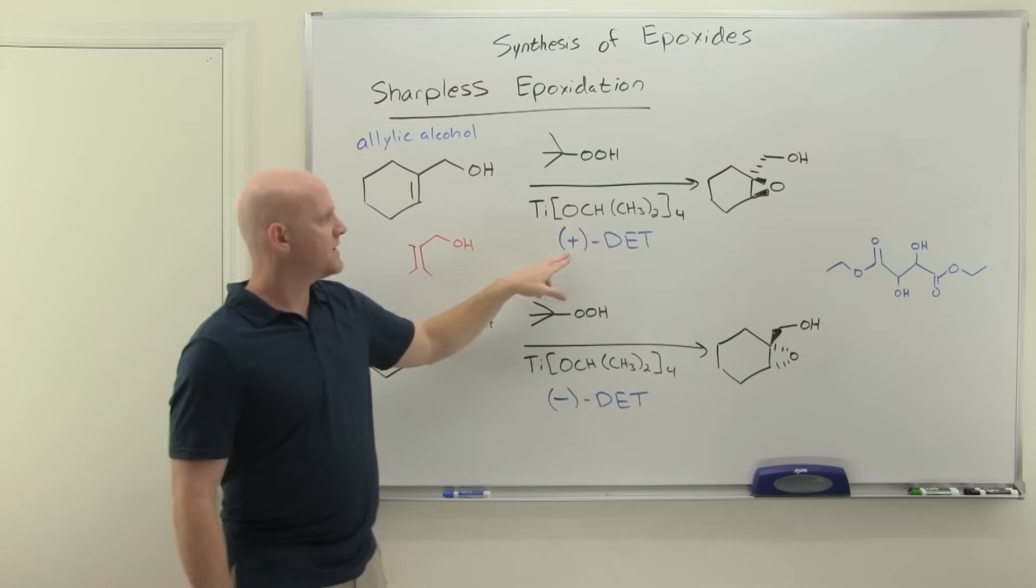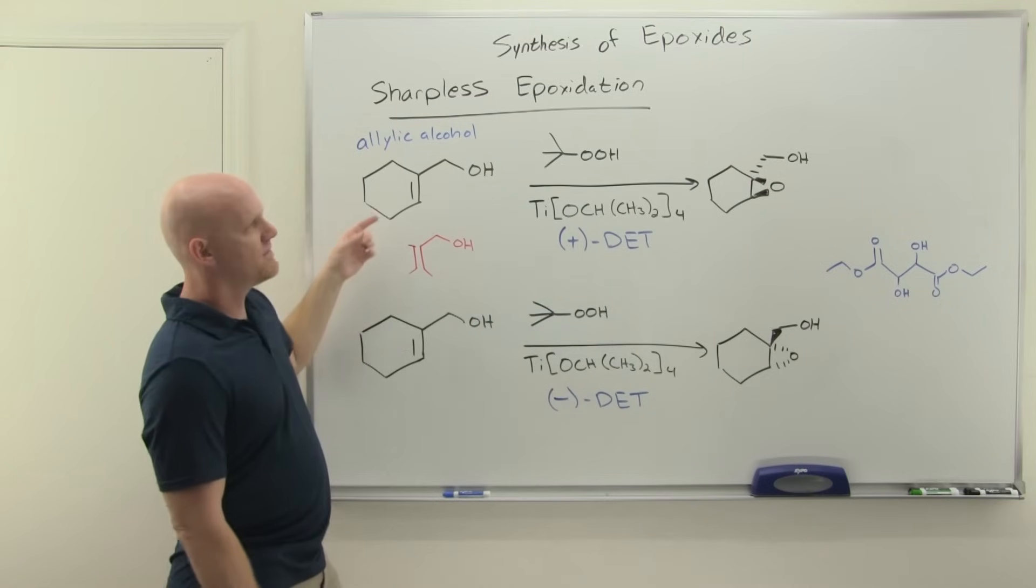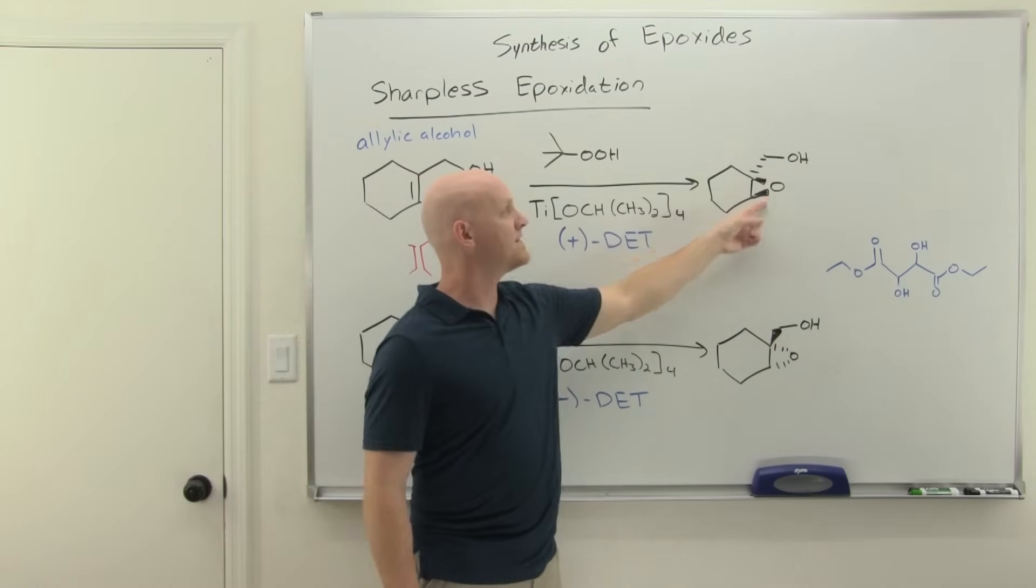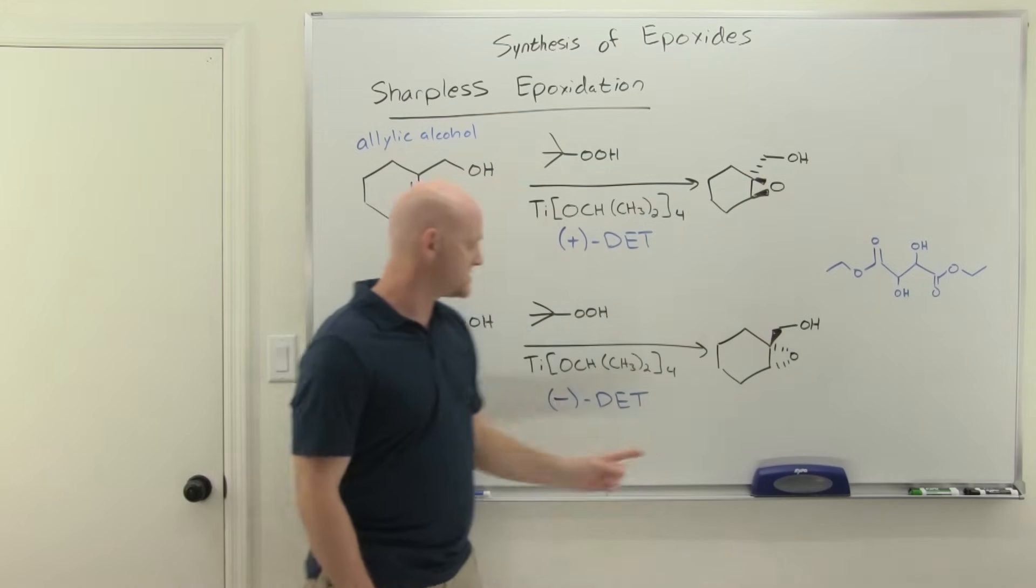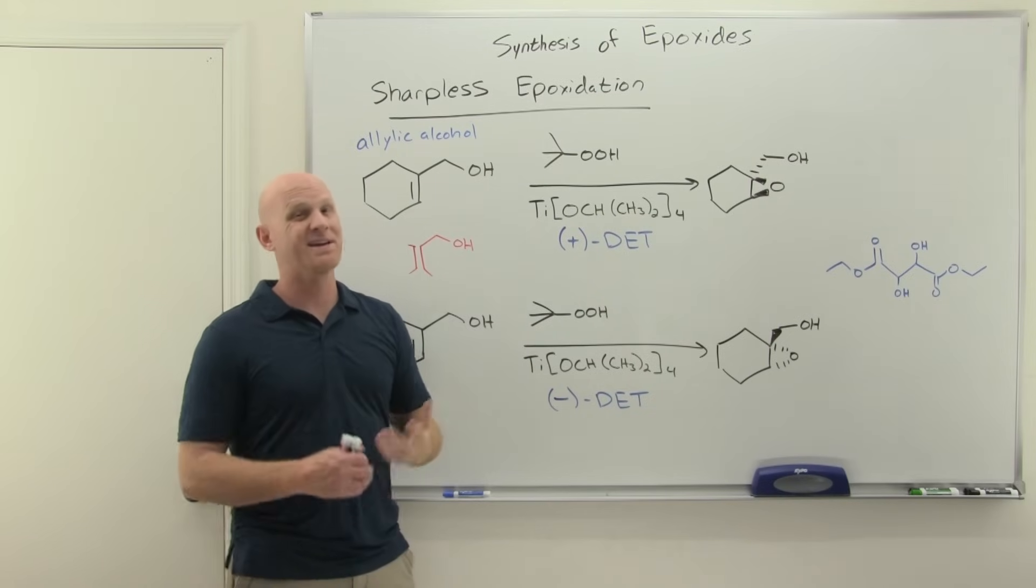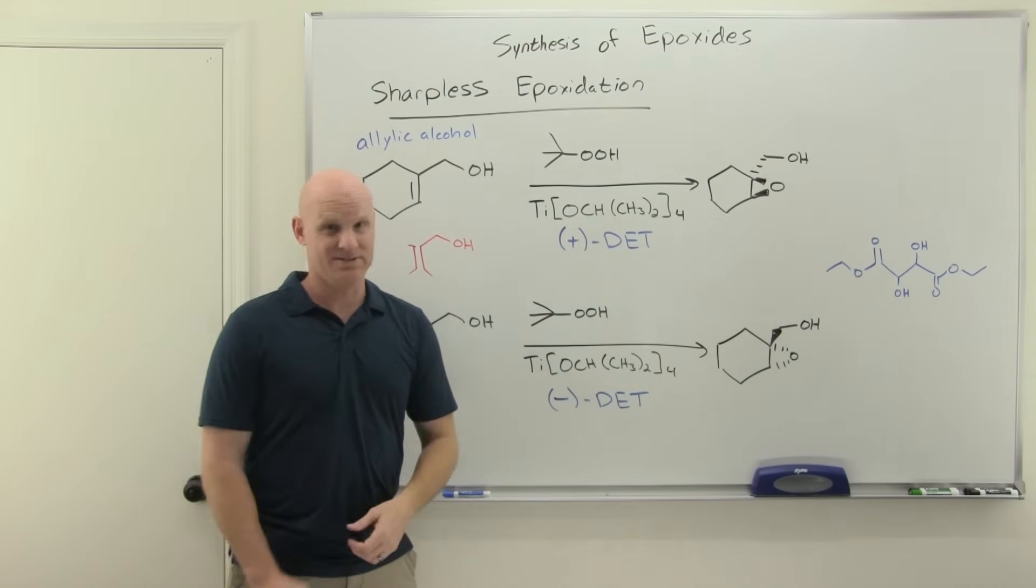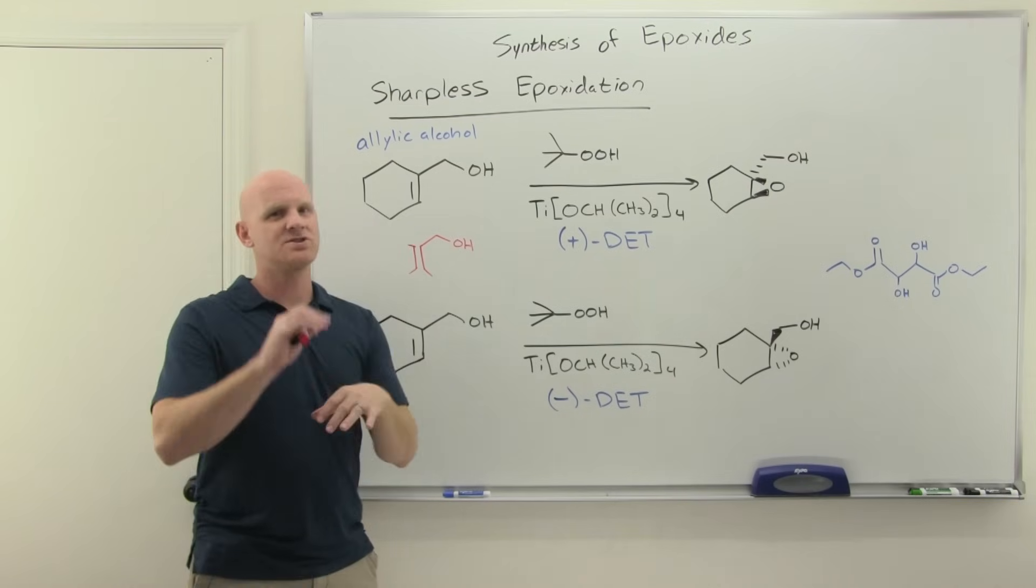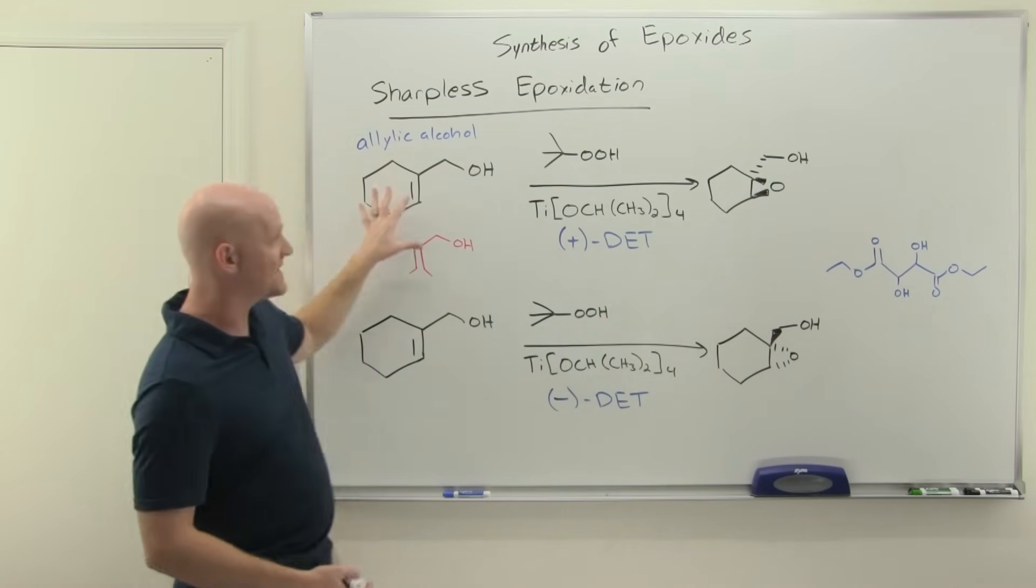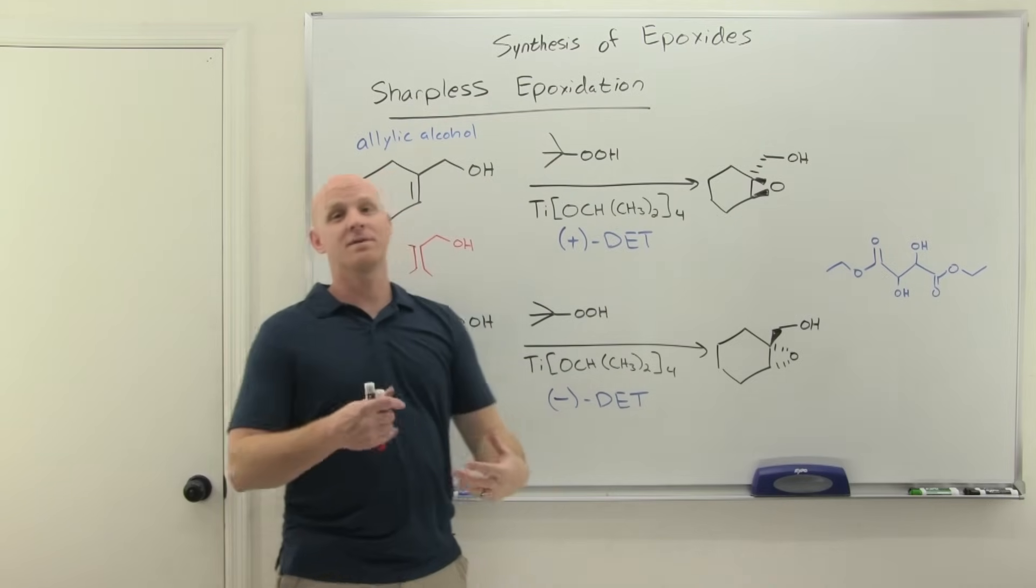Then with plus diethyl tartrate, form your epoxide off to the right with wedges when you're using plus diethyl tartrate. Form it off to the right with dashes when you're using minus diethyl tartrate. That's the deal. So like I said, you'll see this presented in a variety of ways, but getting the three-dimensionality down from your reactant relative to your product, it is a pain in the butt.